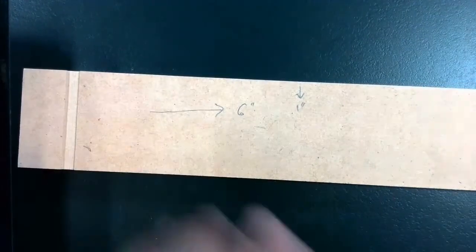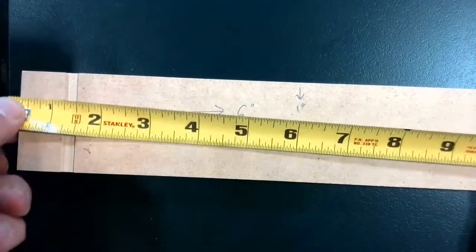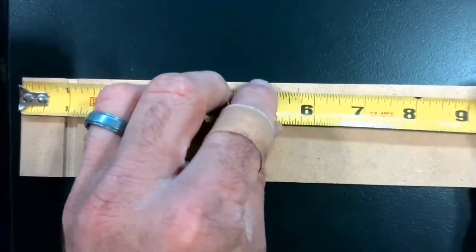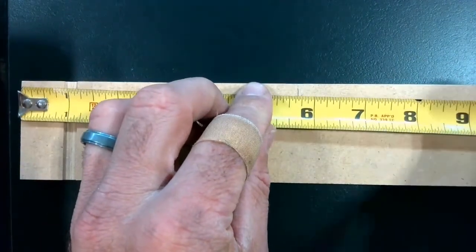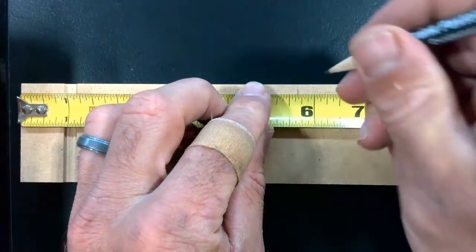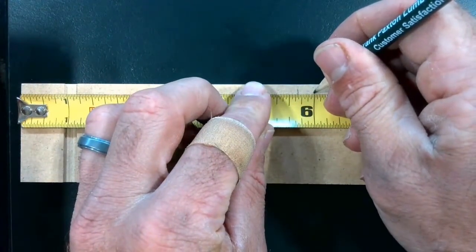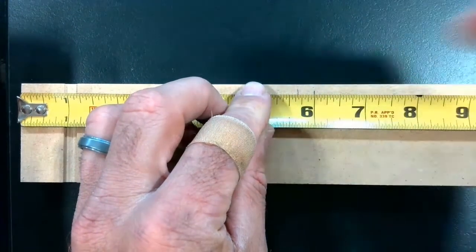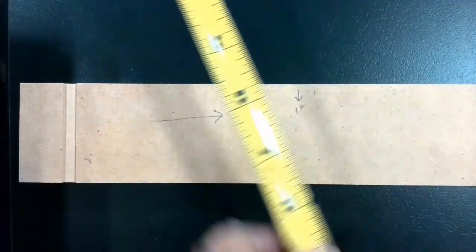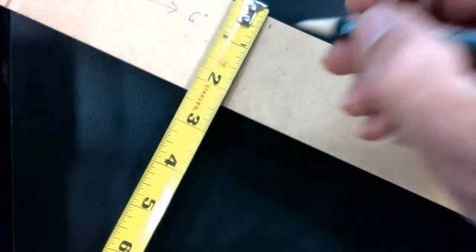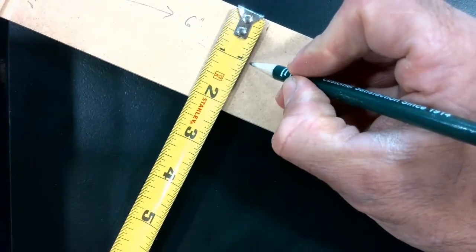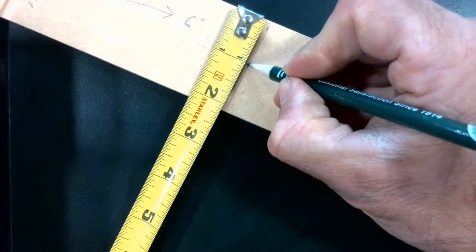So the first thing I'm going to do is I'm going to take my tape measure, and measuring along the edge, I'm going to put a small mark right at six inches, and then near that six inch mark, I'm going to measure down, and I'm going to put a mark right at one inch.